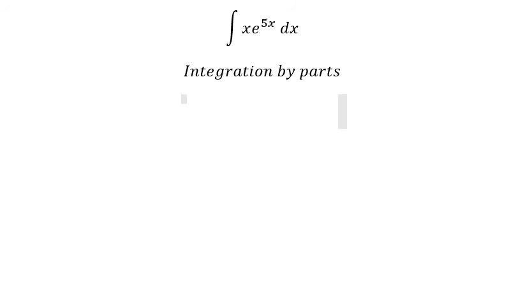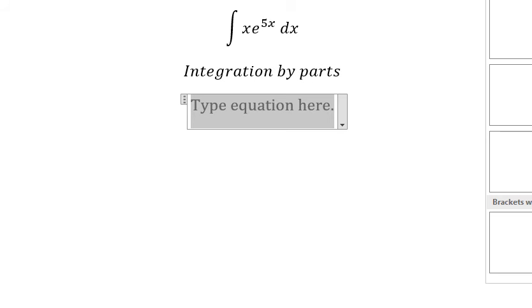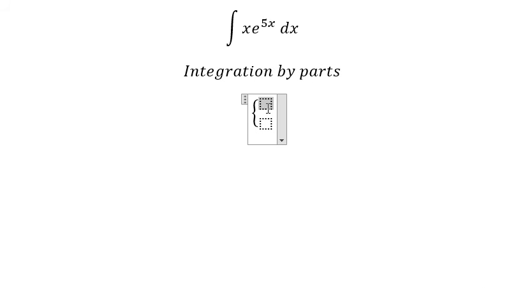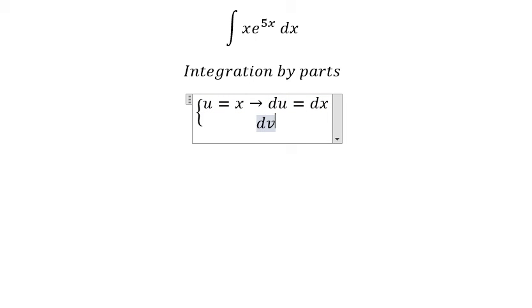So we have u equals x, du equals dx, and dv. We have e to the power of 5x dx.